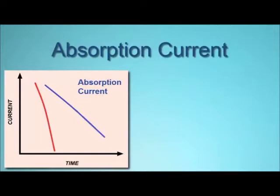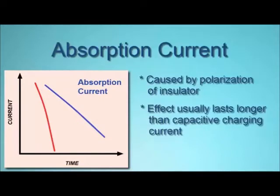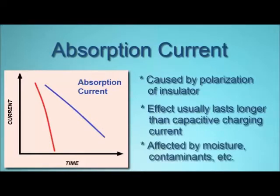Absorption current, also called polarization absorption current, is caused by the insulating material becoming polarized by the electricity flowing through the conductor. As the polarization level increases, the absorption current decreases. This gradual change reflects the storage of potential energy in and along the insulation. As a result, resistance is initially lower and then rises. This produces a measurement profile similar to capacitive charging current, but at a much lower rate. The effect can last several seconds up to a minute or more. The length of time it takes for absorption current to fall off can be affected by moisture or other contaminants in the insulation material. Therefore, absorption current is an important indicator of insulation integrity.